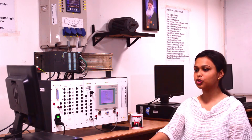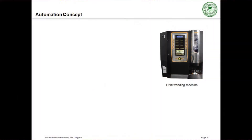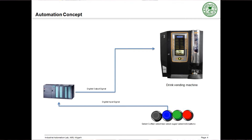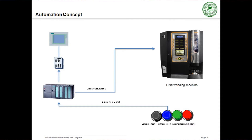This figure shows the automation concept. The control of the machine is done by switches. We can select tea, sugar, coffee, and milk from the buttons present on the machine. All these hardware components are interfaced to the PLC. The operation monitoring can be done by the HMI or the SCADA system.